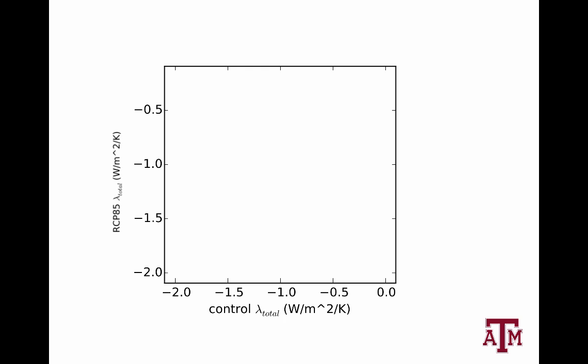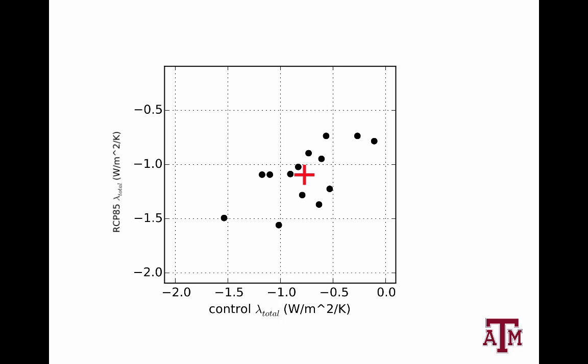I assume forcing ramps linearly from 2.3 to 8.5 watts, and I'm only analyzing 2006 to 2100. I've compared the lambda I get to Andrew's GRL paper 2012, and I get pretty close values except for MIROC-5. So here's what I get: you see there's a correlation. The zeroth-order result tells you that if you know lambda from CERES, it will tell you what lambda is from long-term warming, at least within the uncertainties.